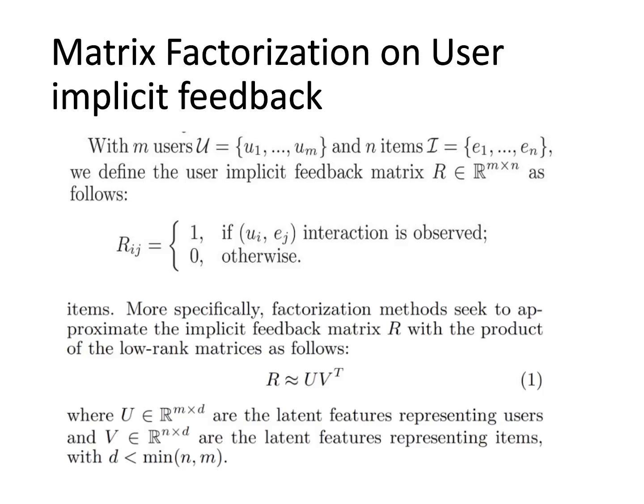Matrix factorization was already discussed in the first paper. Here, if a user has an interaction with an item, the matrix has value one; if no interaction, it is zero. This interaction matrix is factorized by two lower-rank factor matrices U and V.